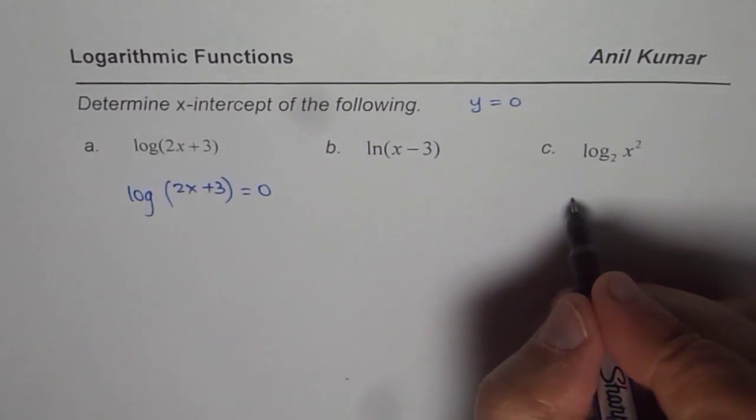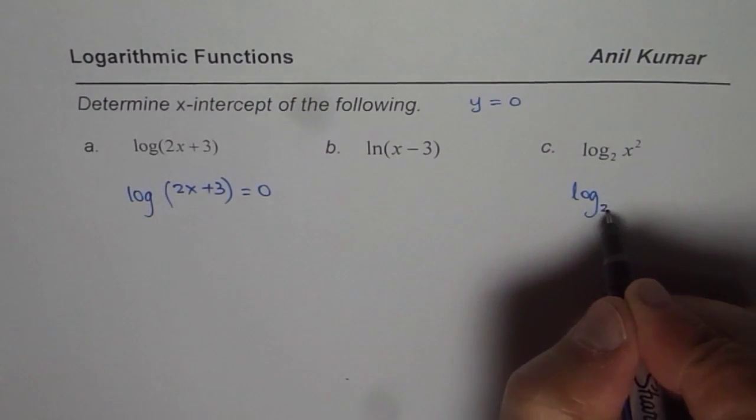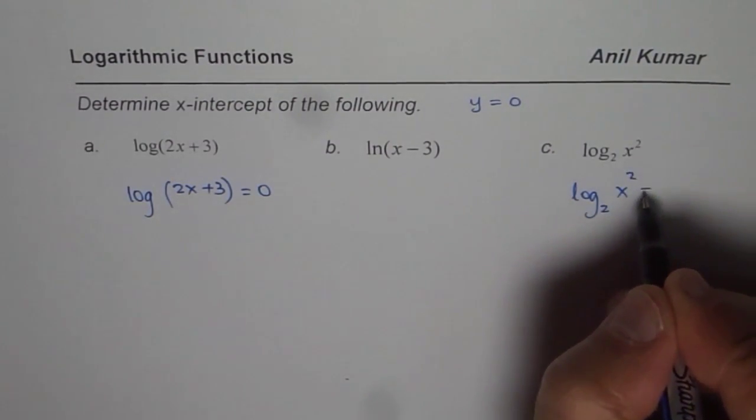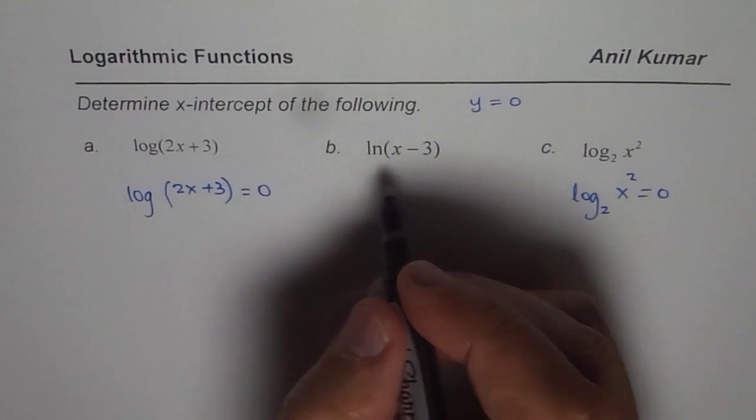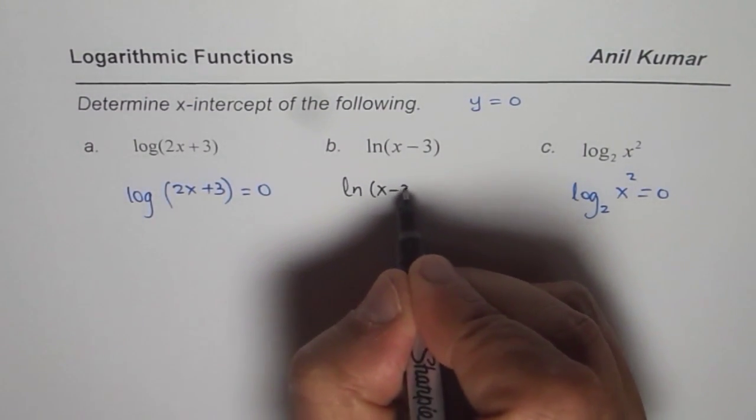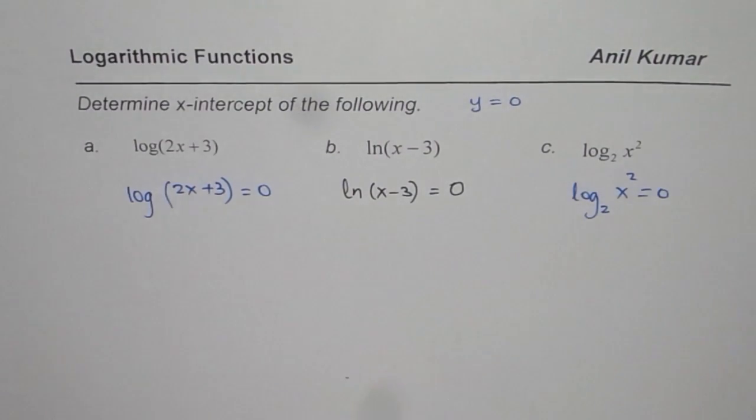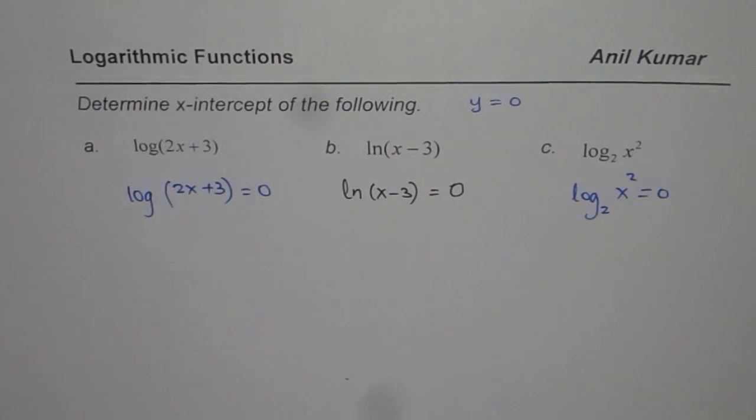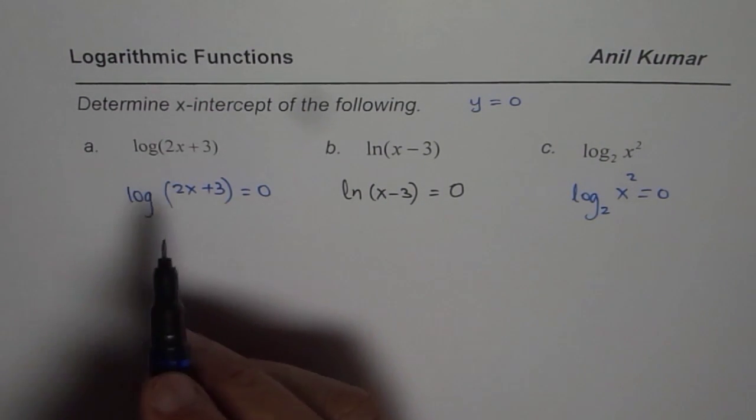That should be equal to 0. The second one, let me write the third one first, log to the base 2 of x squared equals to 0 and I want to change the ink to write the middle one which is ln, and we want to write this as equals to 0. We basically get three equations to solve when we are trying to find the x-intercepts.